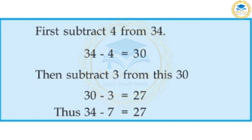First, subtract 4 from 34. Then 34 minus 4 is equal to 30. Then subtract 3 from 30. Thus 34 minus 7 is equal to 27.